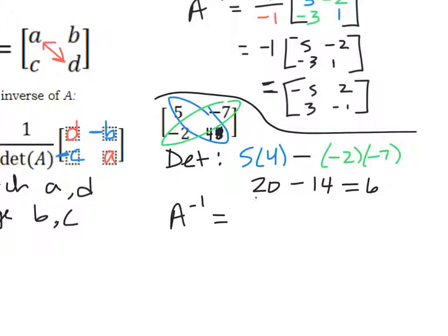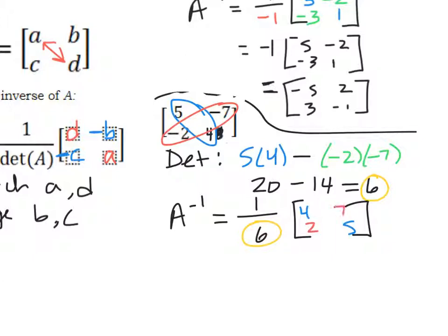Times my new matrix, which, remember, is going to be where I switch my first diagonal, so 4 and 5, and then change the signs of my other 2 and 7. And when I multiply these, we can just leave it 1 over 6 outside, but we're just going to put everything over 6 inside. I don't even need you to simplify right now, just leave it, and we are good to go.